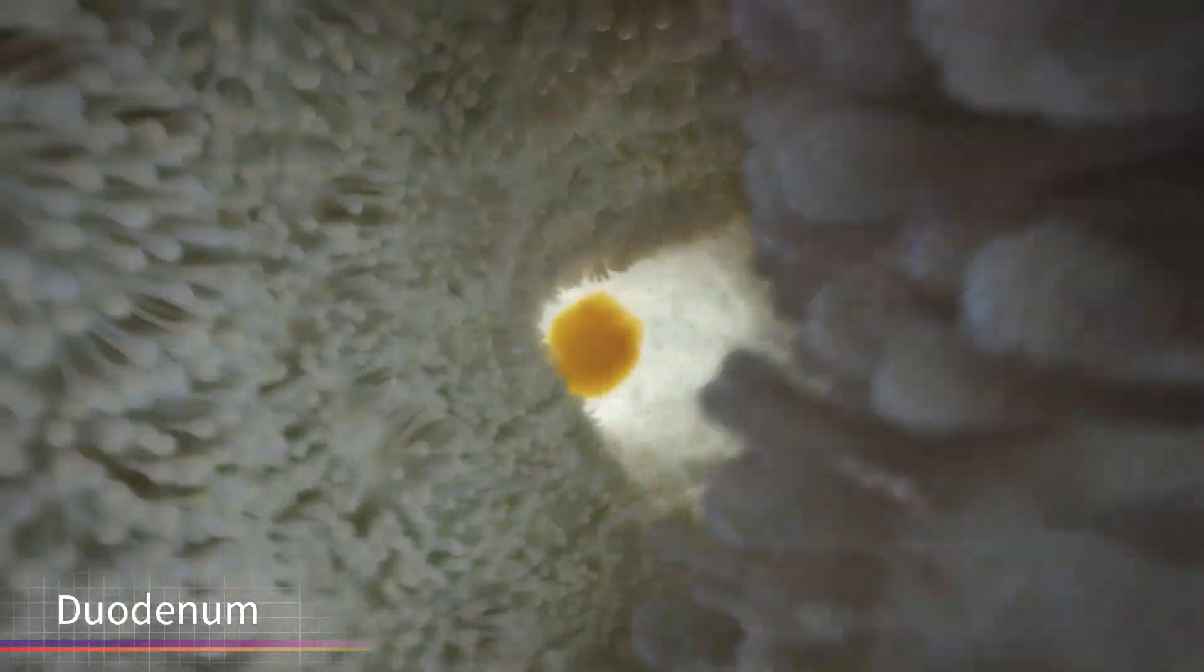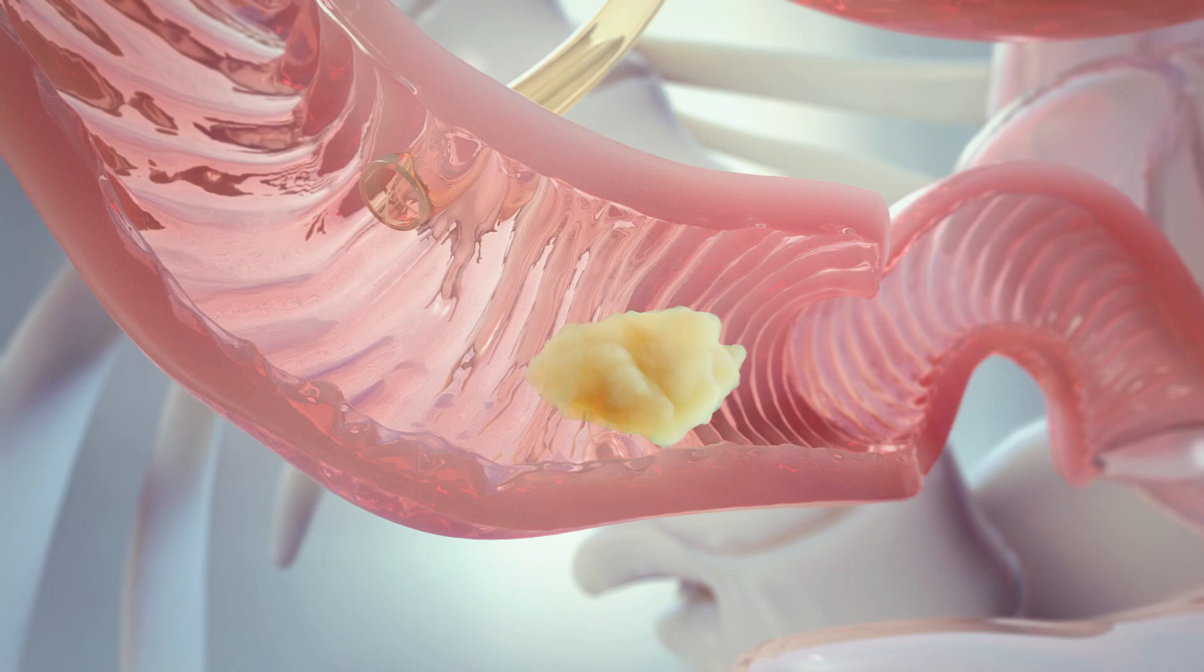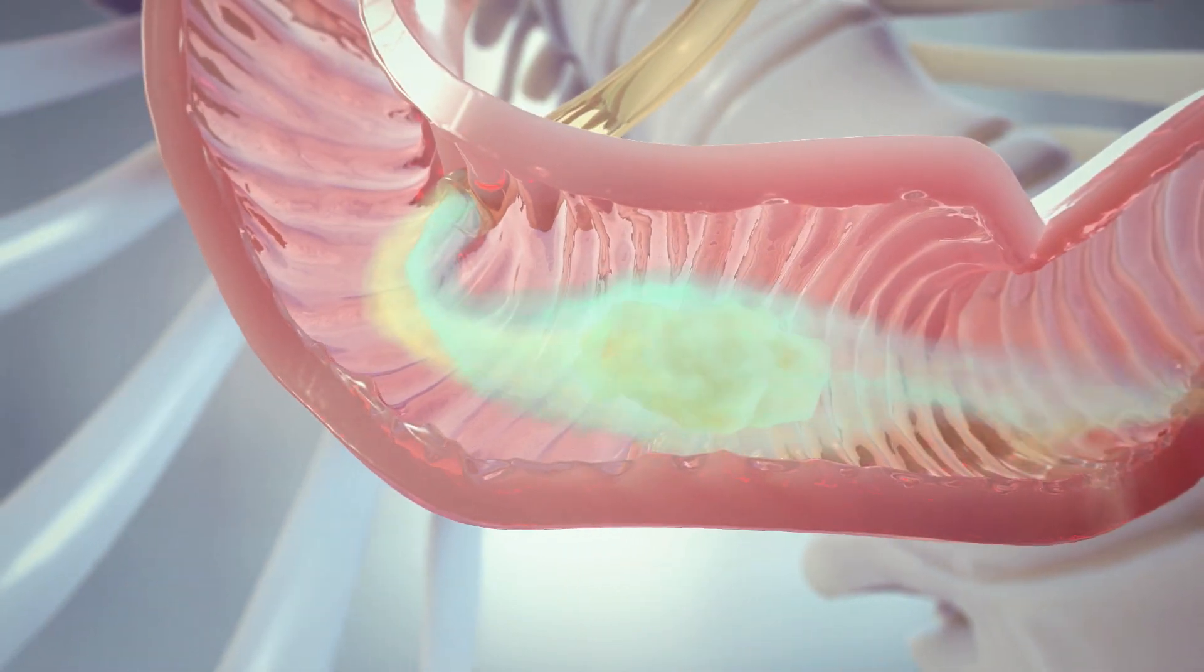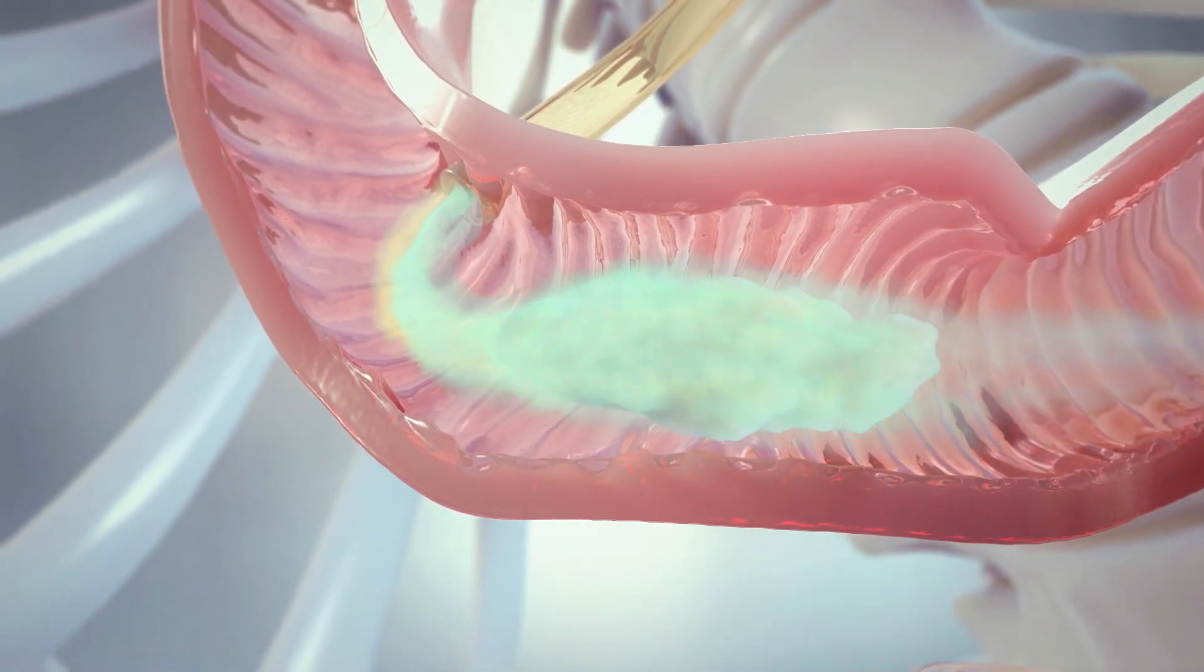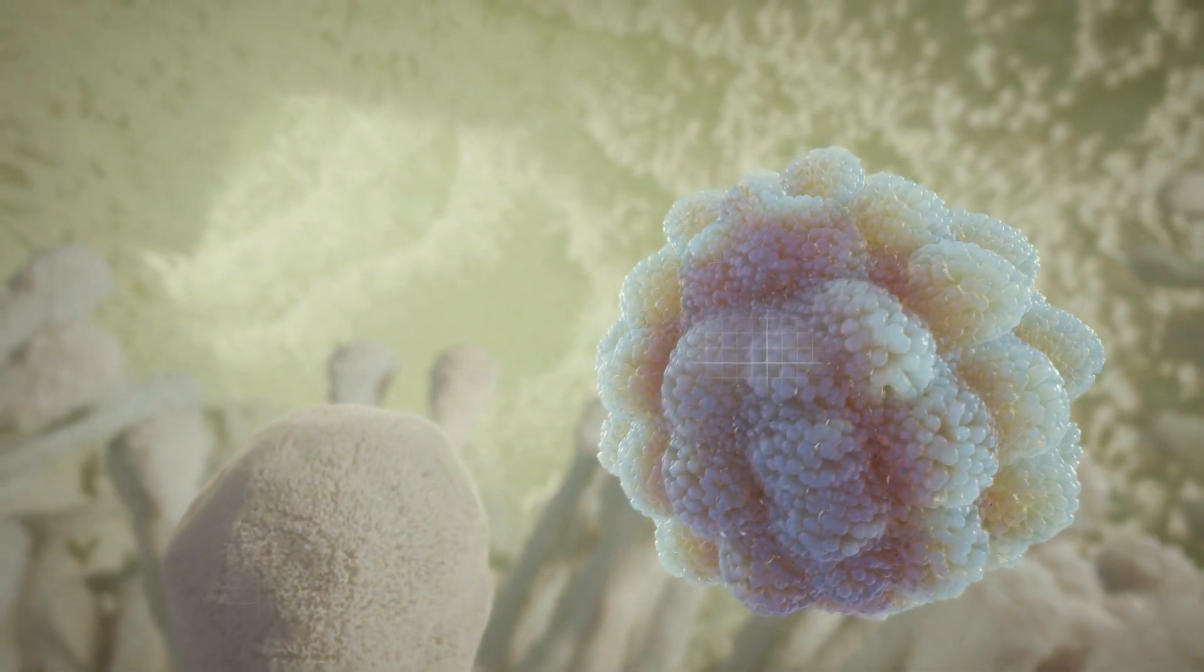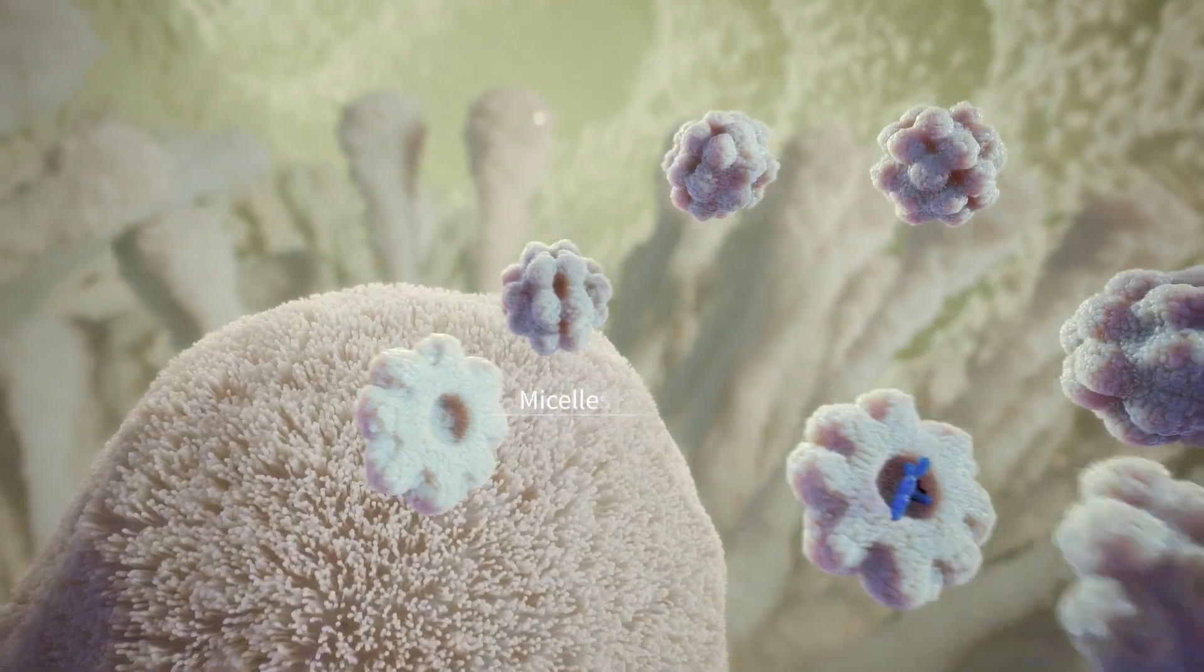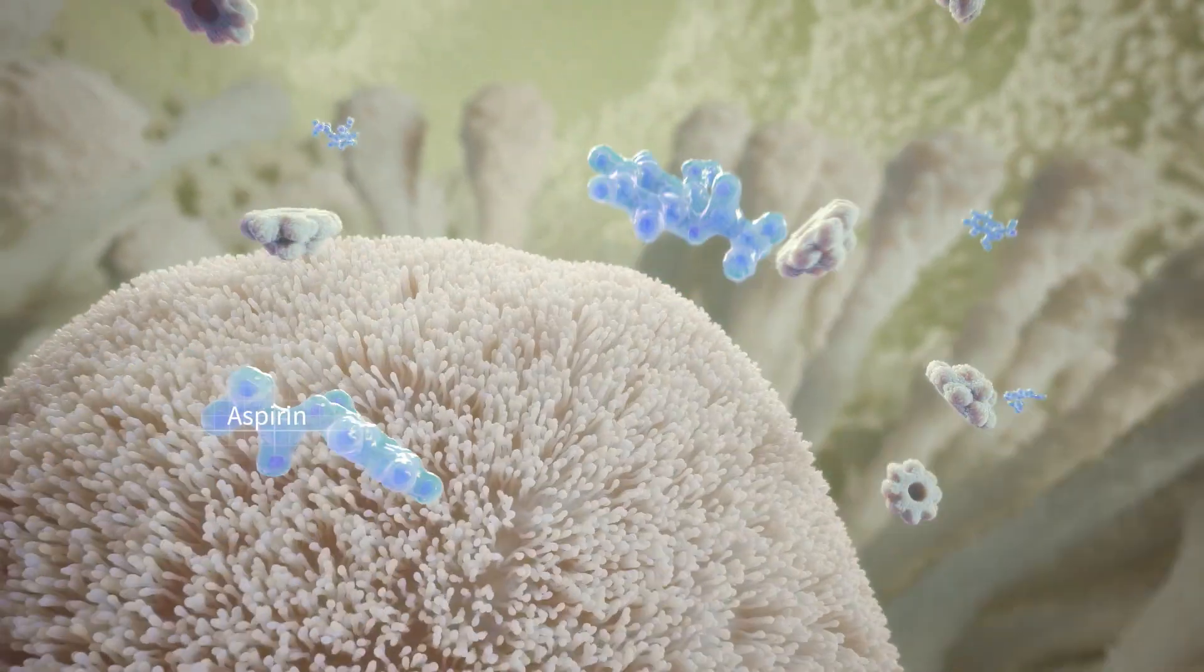The lipid matrix is passed to the duodenum, where naturally secreted digestive agents, bicarbonate and bile, emulsify it, transforming the lipid suspension into large vesicles and subsequently smaller aspirin-containing micelles, which can then be absorbed.